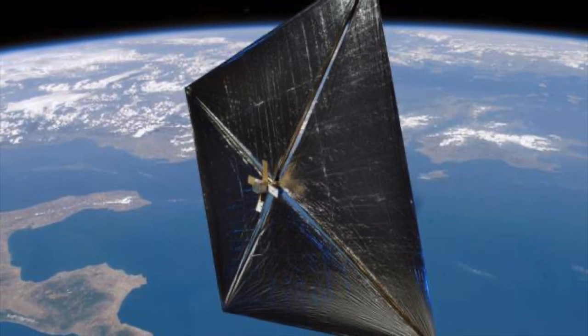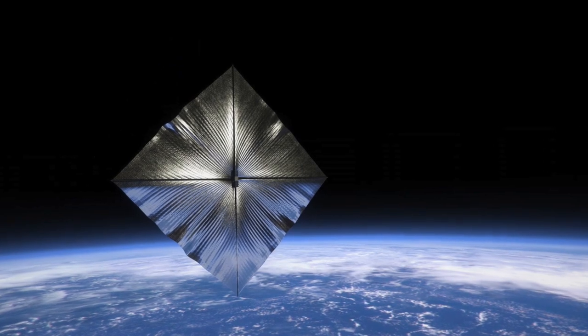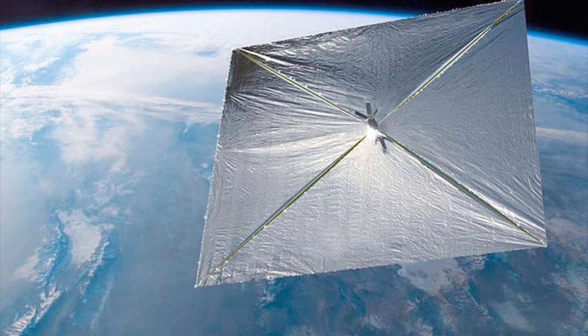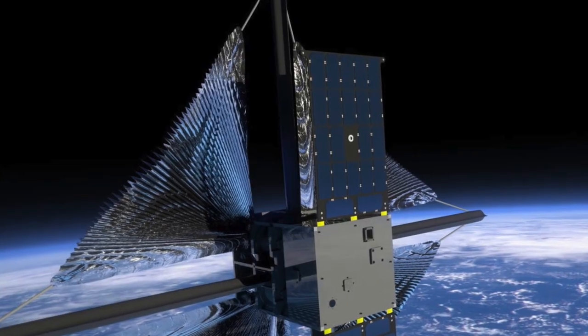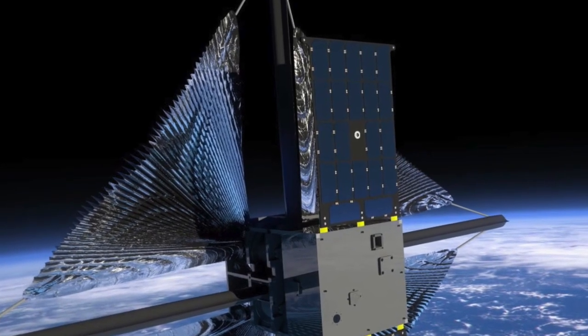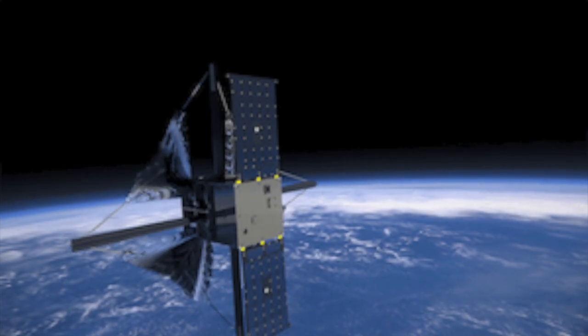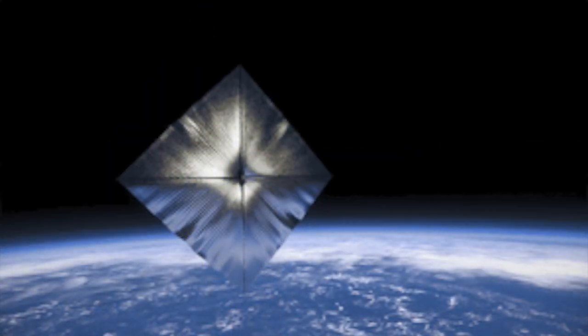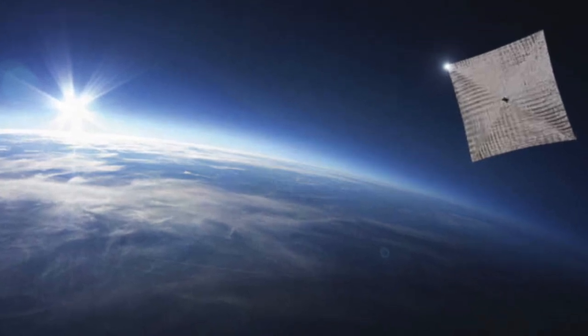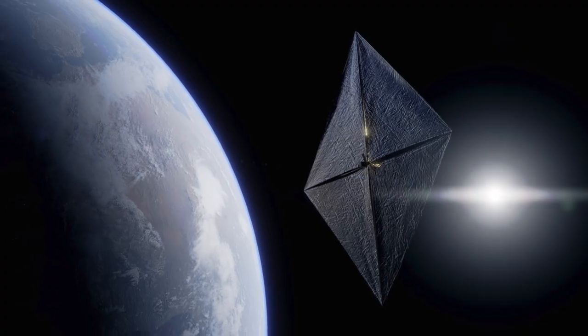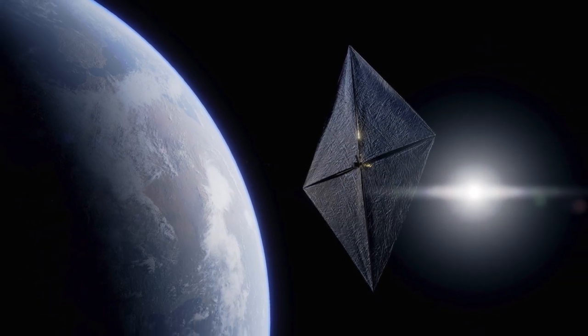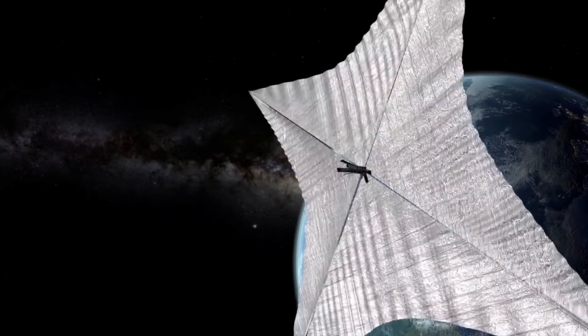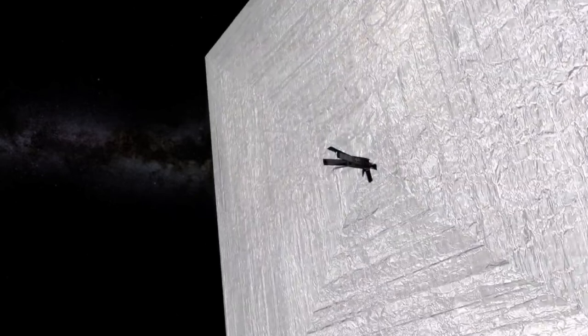The European Space Agency, ESA, proposed the Gossamer deorbit sail to accelerate deorbiting of small artificial satellites. Okeanos, a proposed JAXA mission, aimed to explore Jupiter's Trojan asteroids using a hybrid solar sail for propulsion. Breakthrough Starshot aims to send nanocraft to Alpha Centauri propelled by ground-based lasers. The Solar Cruiser Project, awarded by NASA in 2019, plans to have a large solar sail orbit the Sun to study the solar corona.